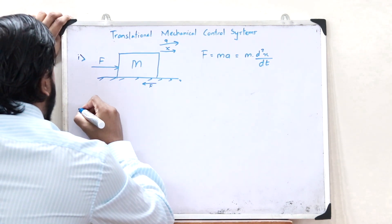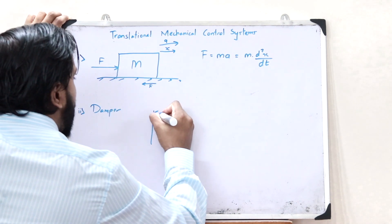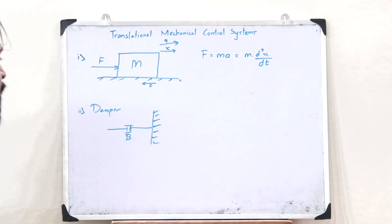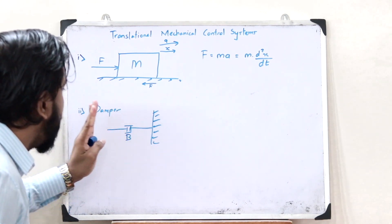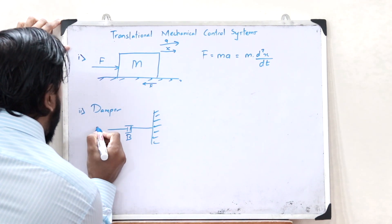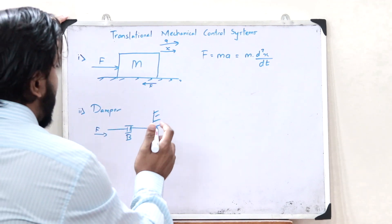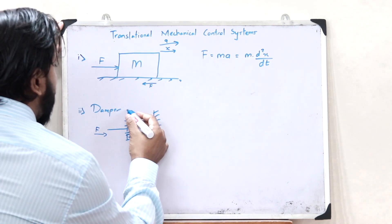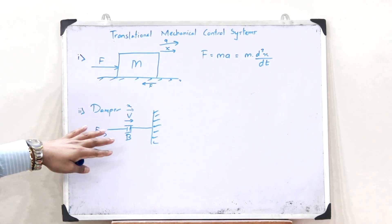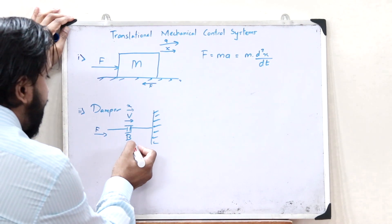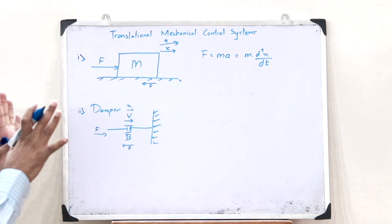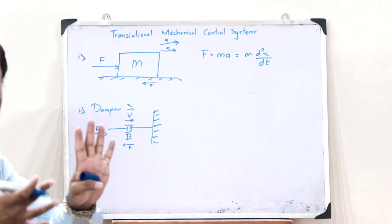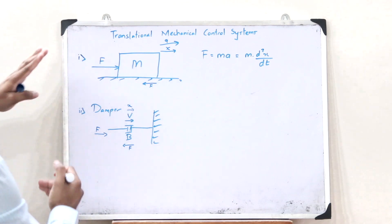Now let us take the case of a particular damper. Let us consider a particular wall and on the wall let us assume a particular damper with a damping constant b. Now let us apply a particular force in this particular direction on this damper. When we apply a force here, what we observe is that it would move with a particular velocity v in this direction and it would also undergo a particular displacement x. For a particular damper, the restoring force would act in the opposite direction — when we compress this damper, it tends to restore to its original position. When we apply this force, a restoring force acts in the opposite direction.